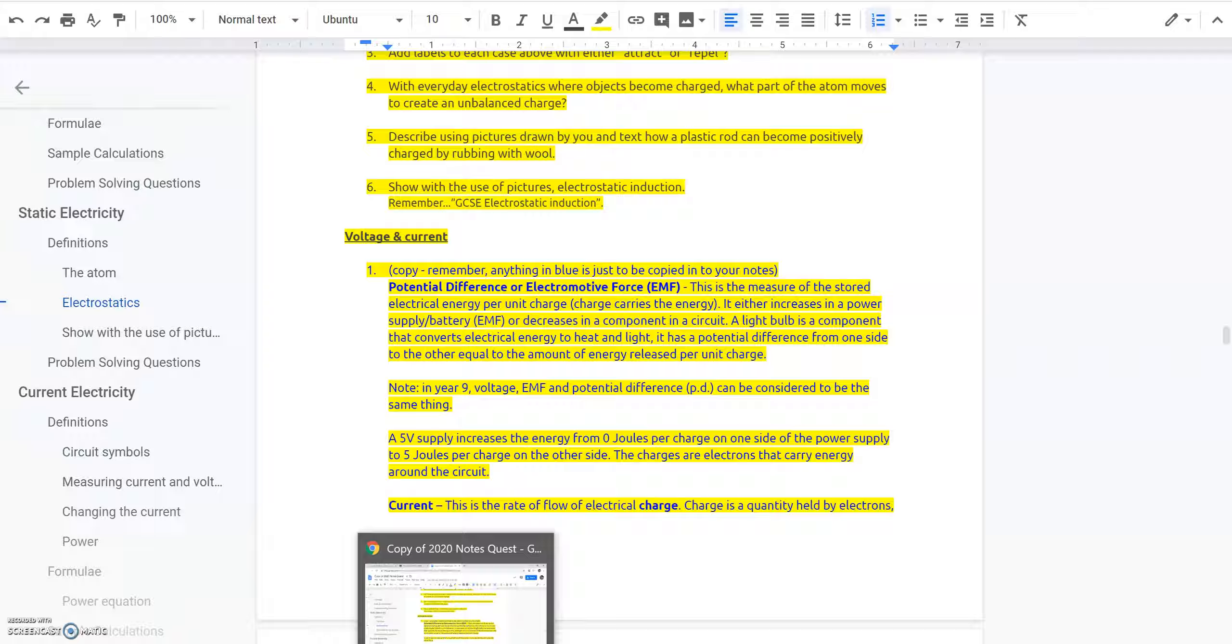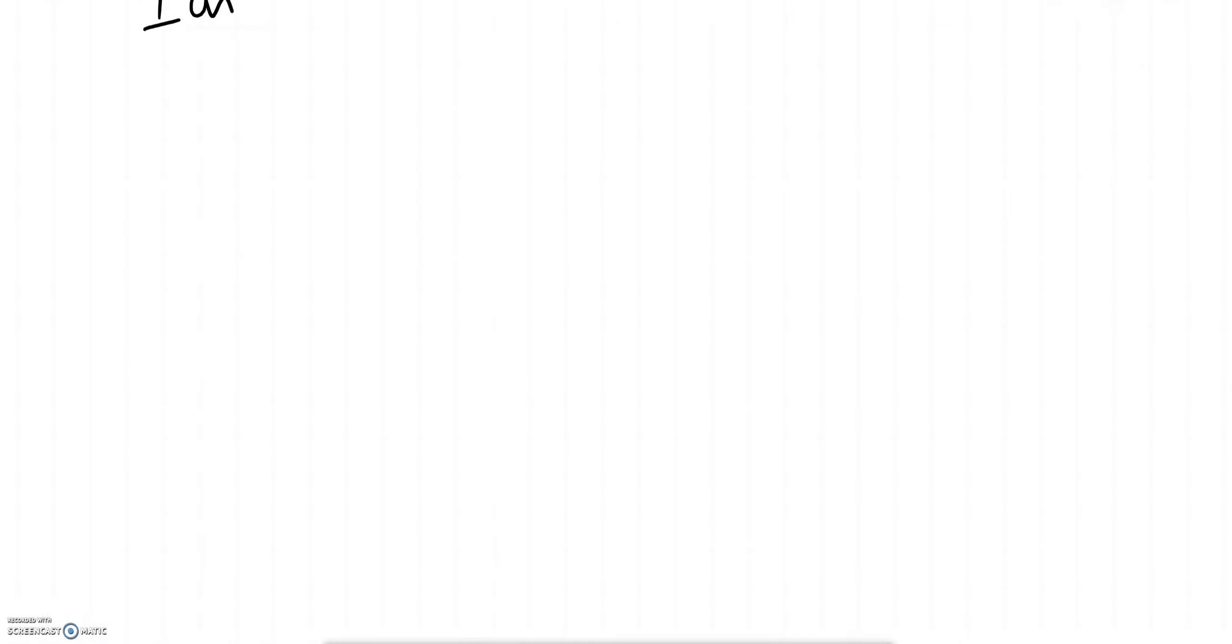And then you could answer that based on that. Question four asks you which part moves or is transferred when we create charge. So let's see if we can get an idea of what creates charge. Let's say we have some sort of cloth here which is neutral and a rod. Now some types of materials when they're rubbed we create charge.